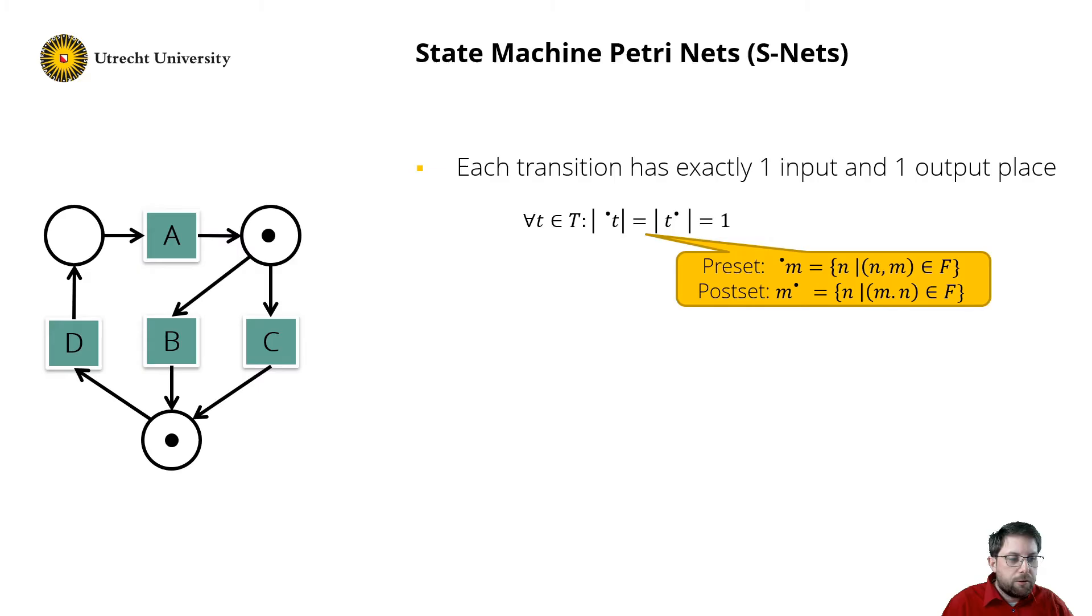State machines have some nice properties, and I want to mention two of them. First of all, the number of tokens remains the same in every marking. So that means that you counted the number of tokens in the initial marking, and then you can check in each other marking whether their number of tokens is exactly the same as in the initial marking. So this helps in checking your reachability graph.